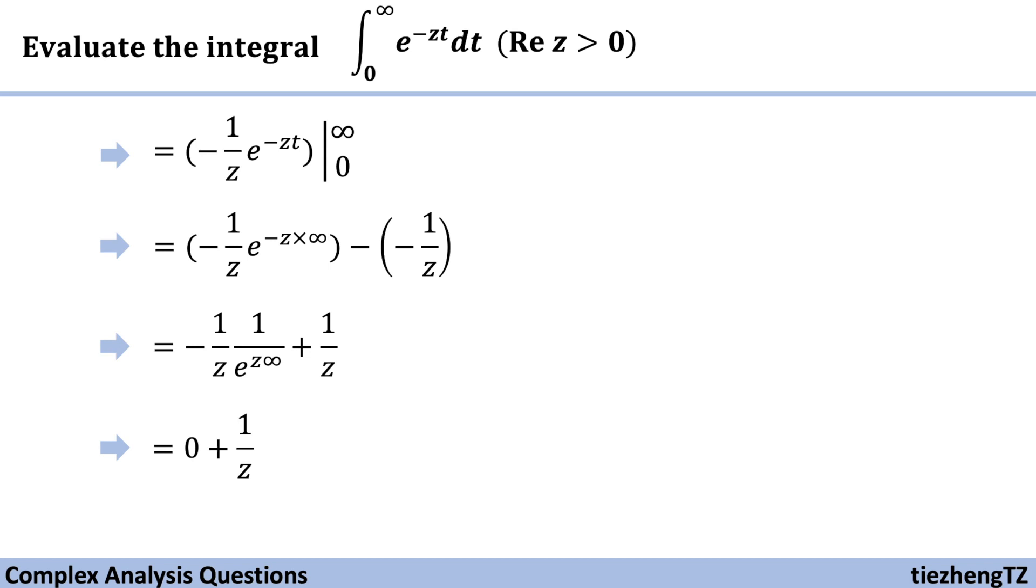So it's equal to zero, and of course the final result is just 1 over z.